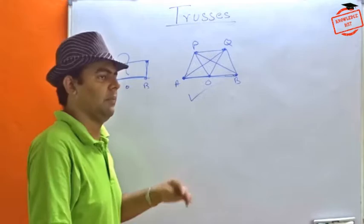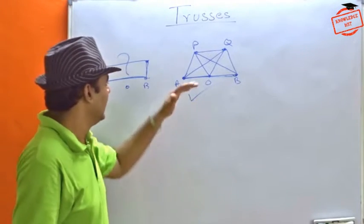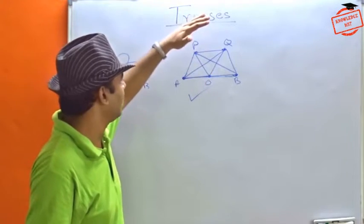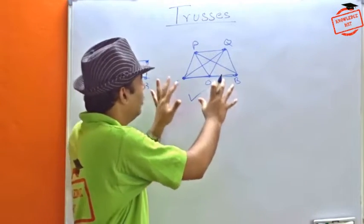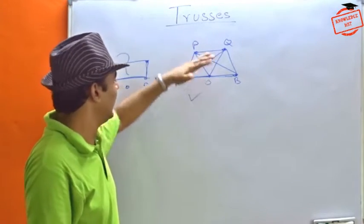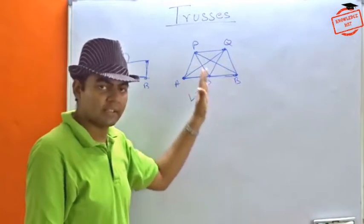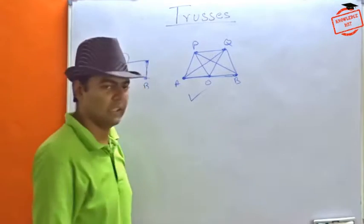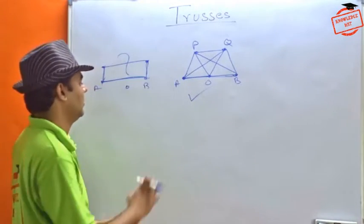And this is just an example of a bridge. For any place where we have to construct or build anything where load is an important factor, load can collapse the entire construction that we have done. We use trusses to balance out these things. But there are some assumptions here. We will look at it one by one.